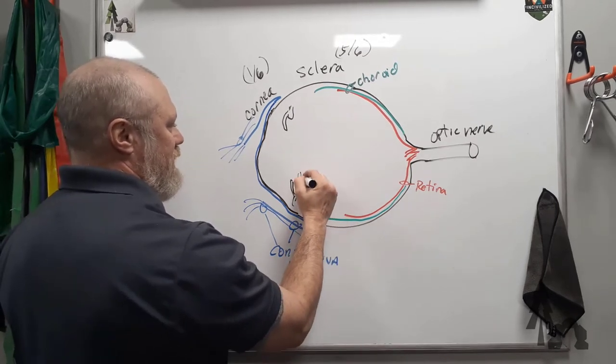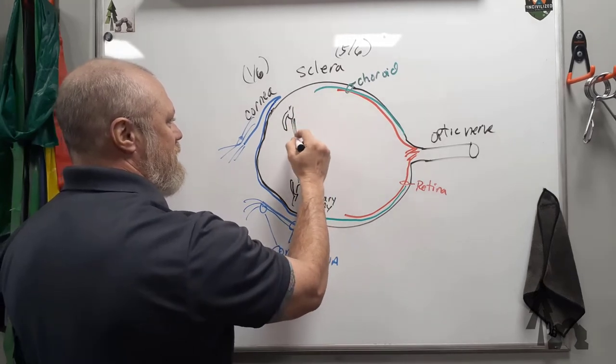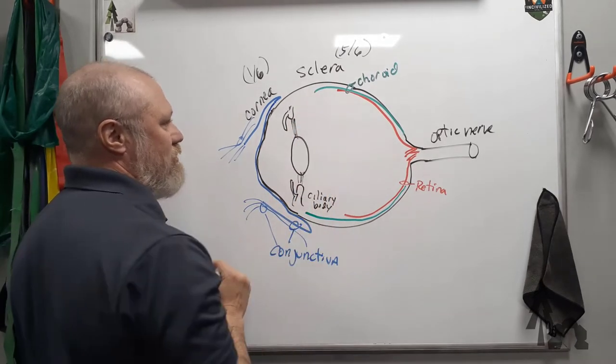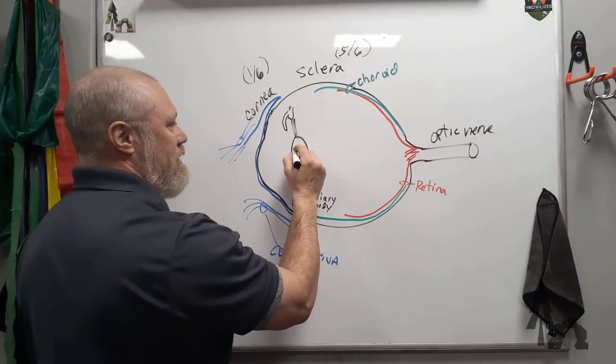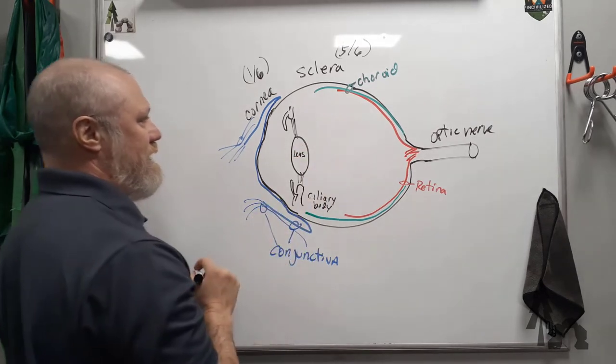From the ciliary body, you get these little suspensory ligaments. And there's this round, sort of oblong structure here that is the lens. The lens of your eye.